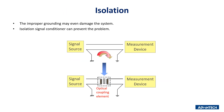Isolation is a circuit design using an optical coupling element that isolates the signal source from the measurement device, preventing the system from being damaged by unpredictable noise signals. With this design, the digital input and output module can support higher voltage.